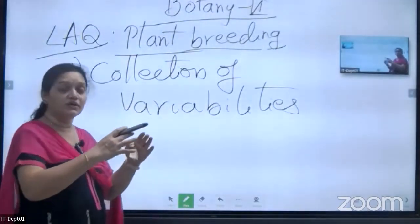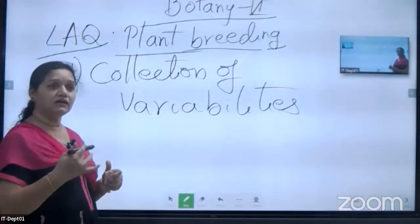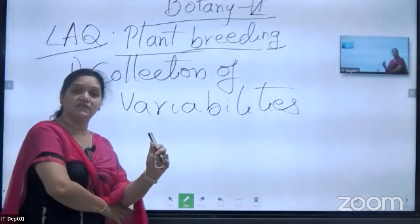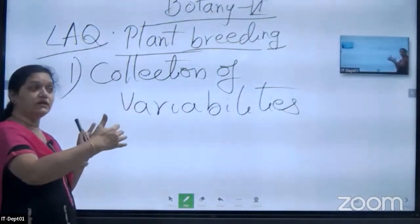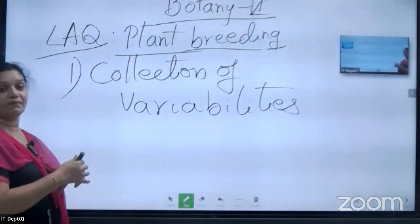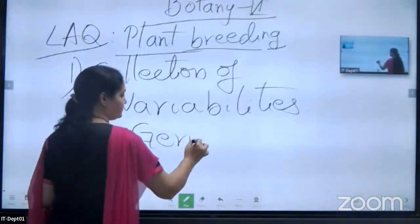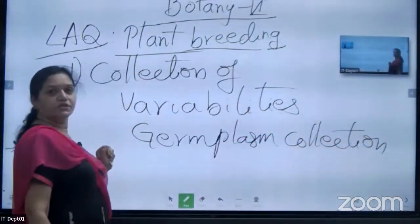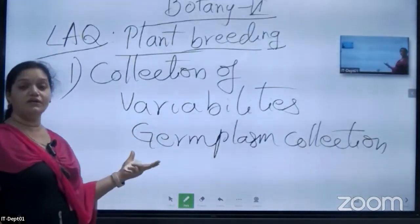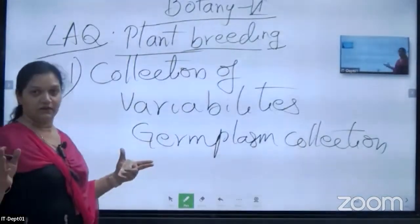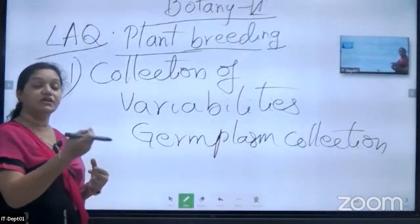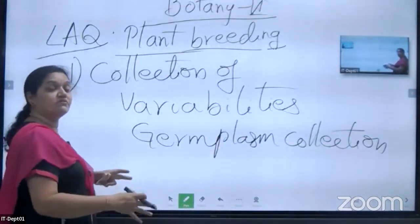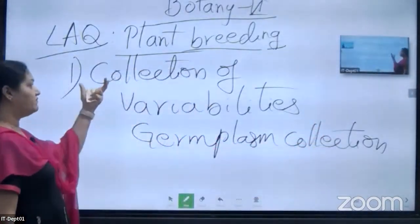In the collection of variabilities, when we collect from different areas, some genes will be somewhat different from the original genotype. The plants collected of different qualities in the same variety — where different genes are present expressing characters in a good manner — that collection of varieties is called the germplasm collection. This is the first step in the plant breeding process.